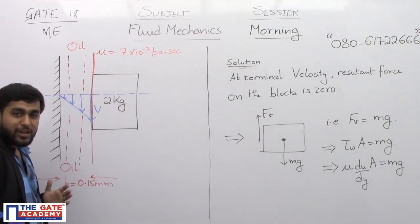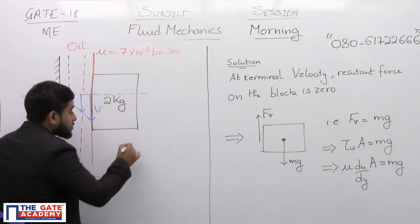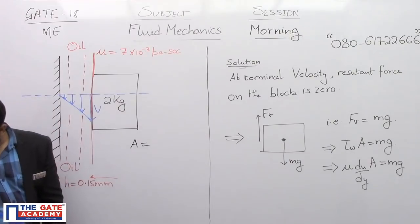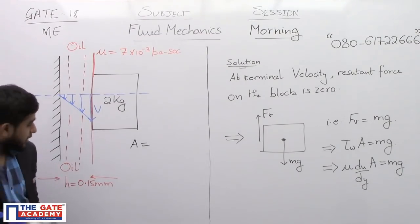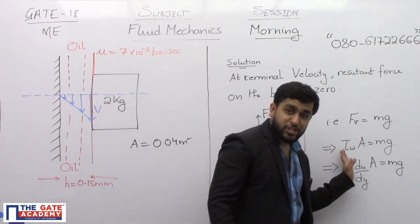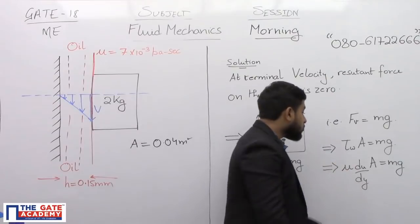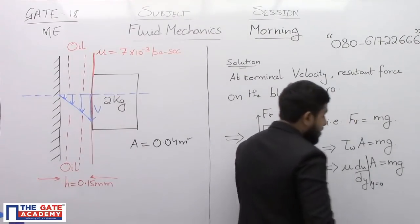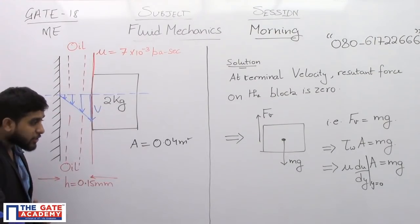Now what is viscous force? Viscous force is the shear stress into area of interface and area of interface is given to us which I have not written on the board. Let me check what the area of interface is. I think the area of interface is somewhat 0.04 meter square. Yes, I am right. It is 0.04 meter square. So the viscous force will be equal to wall shear stress into area of interface. Now what is the wall shear stress? It is mu du by dy at y equal to 0, where y equal to 0 represents the layer of the fluid which is in contact with the block.